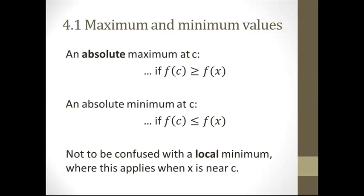We can also speak of local maxima and local minima. That's where we're not talking about the whole equation, but a certain segment of it. When all the x's that are near x equals c — that's a local area — within a closed interval of the equation, you might have a low point or several low points, several high points. It may not be the absolute high or low point of the whole equation, but it's a localized maximum or minimum — a peak or a trough in a particular segment of the function.